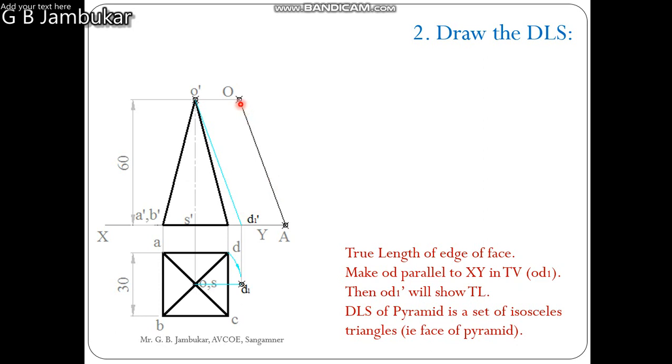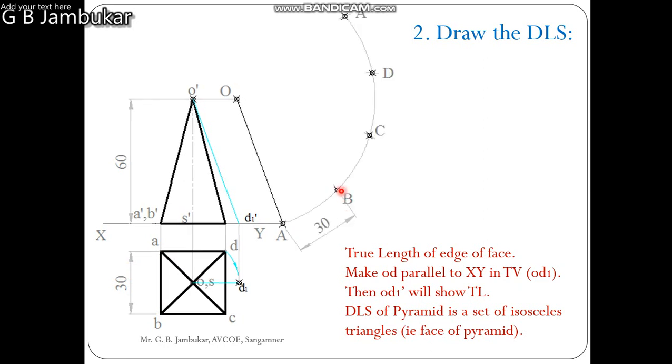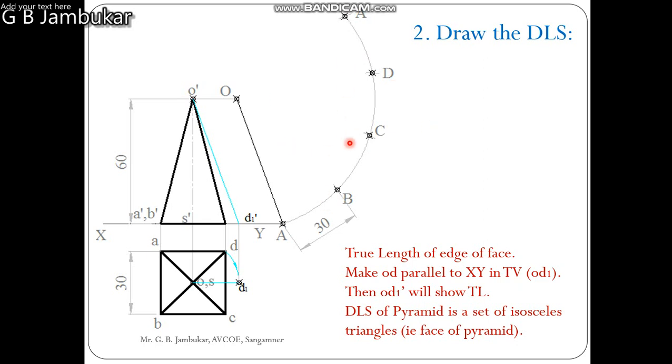Take center O, radius OA, draw an arc. On this arc, take center A, radius 30 mm that is edge of face, center A and locate point B in this way. On the arc we get point B. With the center B, with the same radius, we get point C, D, and A again. By joining all the points, we get the development of lateral surface for the square pyramid.